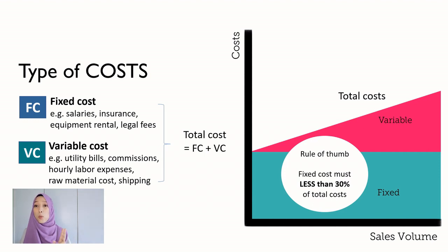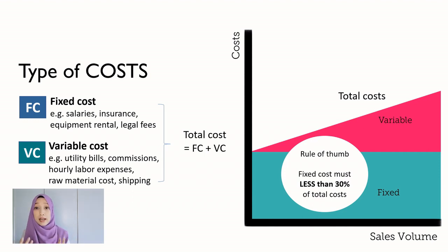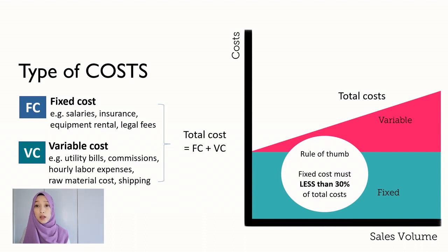Fixed cost does not change no matter how much product or services you produce. Examples of fixed costs include employee salaries — for example, if you have hired employees and agreed to pay them 1,500 ringgit per month, they receive that amount regardless of how many hours they work. Another example is rent for your store, whether online or offline — it's the same amount you pay every month.